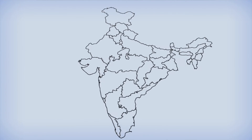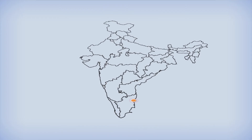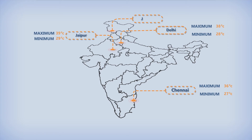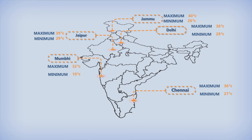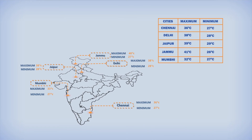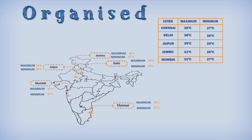Let us look at this India map. At a particular time of the day, Chennai had a maximum of 36 degrees Celsius and a minimum of 27 degrees Celsius. Delhi had a maximum of 38 degrees and a minimum of 28 degrees Celsius. Jaipur had a maximum of 39 degrees and a minimum of 29 degrees Celsius. Jammu had a maximum of 41 degrees and a minimum of 26 degrees. Mumbai had a maximum of 32 degrees Celsius and a minimum of 27 degrees. If you arrange this data in a tabular form, it is said to be organized, making it easy to analyze which state had the maximum or minimum temperature.